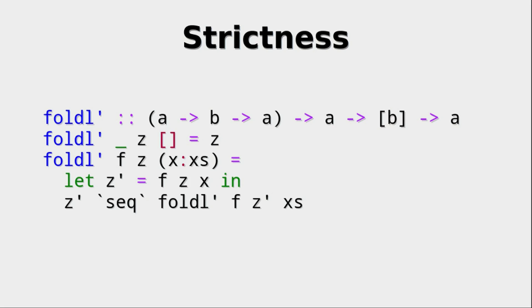So now we can look at how foldL prime is built. Now, here we see that of course, we have our pattern where we have the empty list where we just return the accumulator, which is fine. But then in the second pattern,